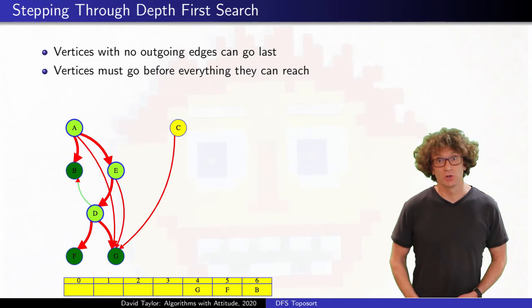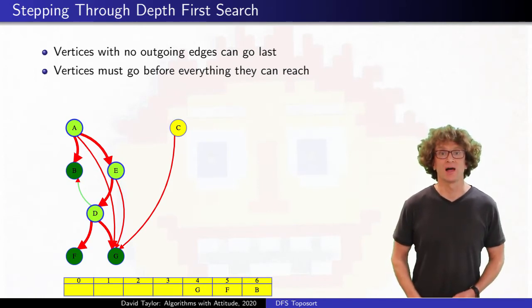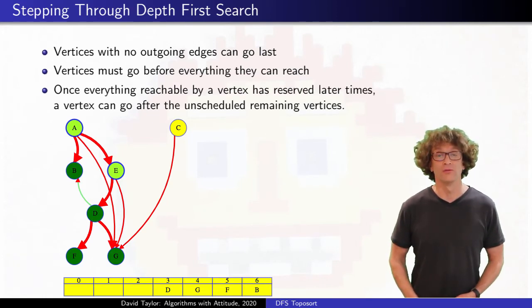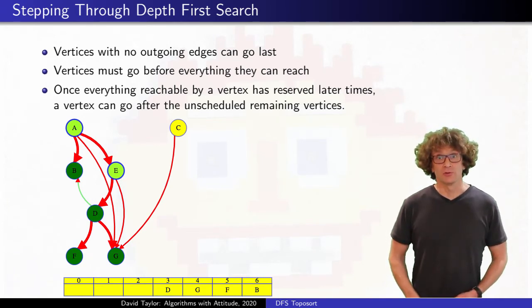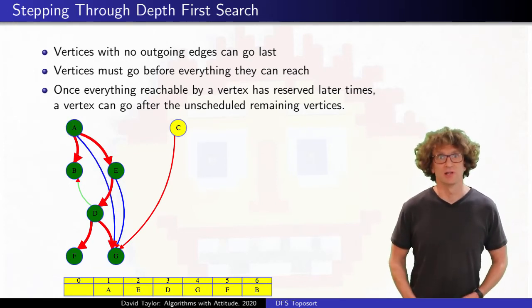Now when we return to D, all of its outgoing edges have been explored. Everything that has to follow it in the topological ordering, everything it can reach, F and G here, have already secured a slot in the ordering after D, so D can go last out of all the remaining vertices. We continue our depth first search. E has a forward edge and then finishes, we can put it in the latest unreserved slot. A has a forward edge and then finishes, we can put it in the latest open slot.